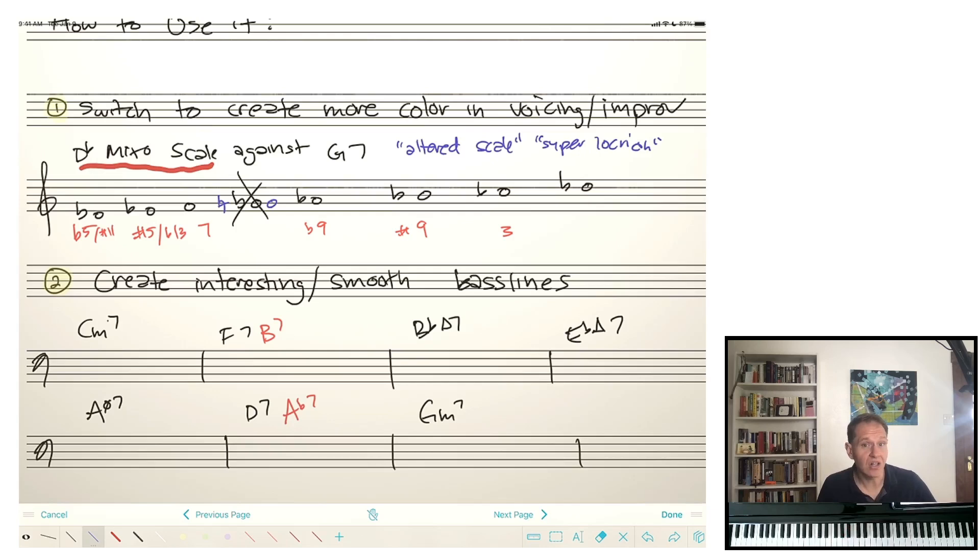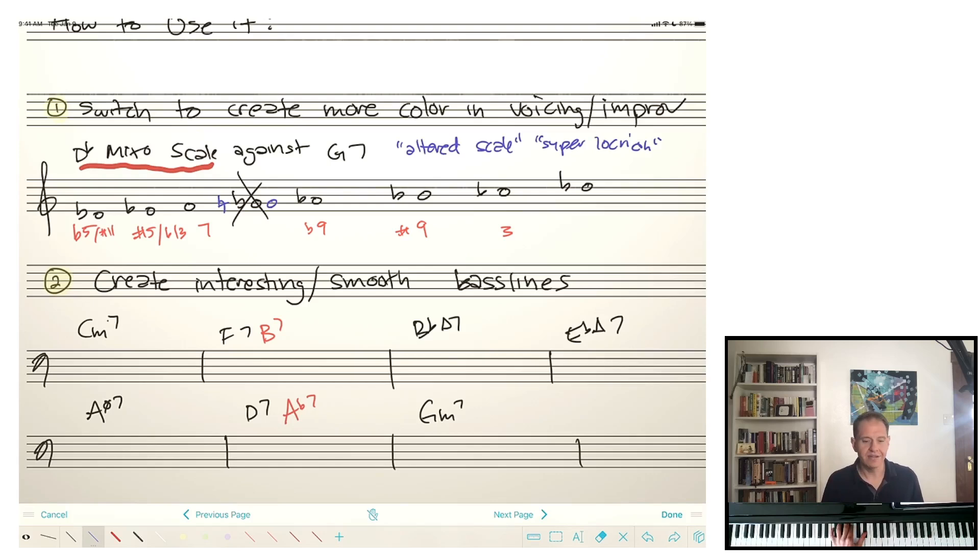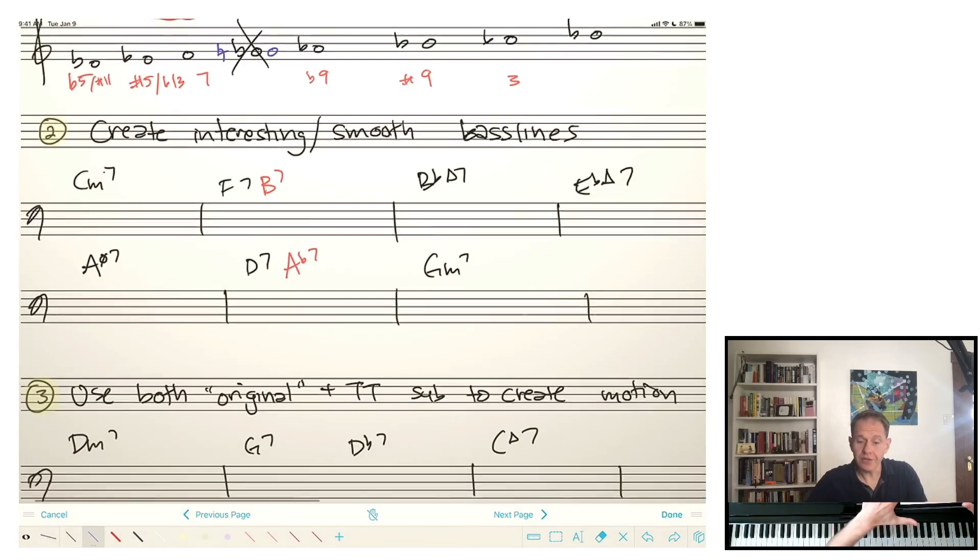And this works for voicings too. If you just want to flip your thinking and think about doing a D flat 7 instead of a G7, then you'll get a bunch of these altered tones. You'll get flat 9, you'll get sharp 9, you'll get your flat 5, sharp 5, whatever it's going to be. Now, you can also use this, as we discussed, to create smooth or just different bass lines. So I've given you here the first few measures of autumn leaves. In black are the normal changes.